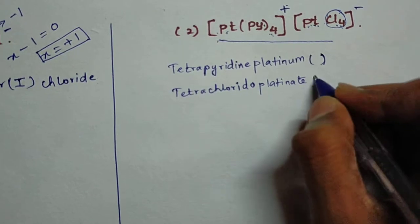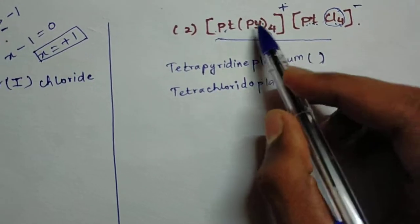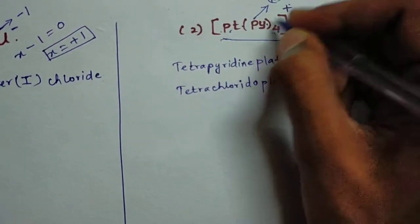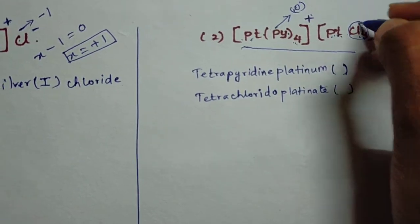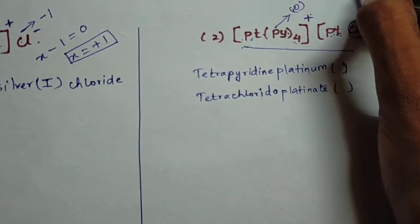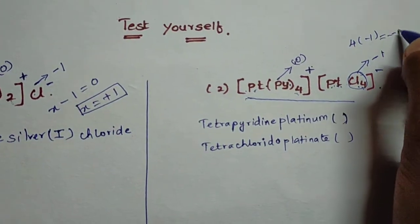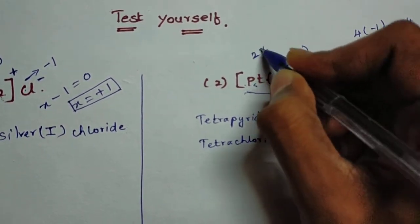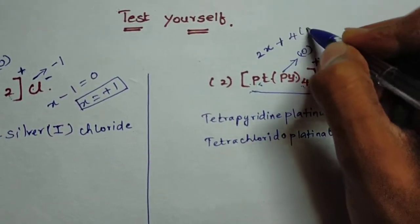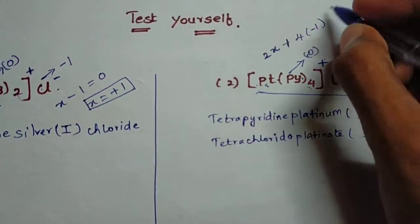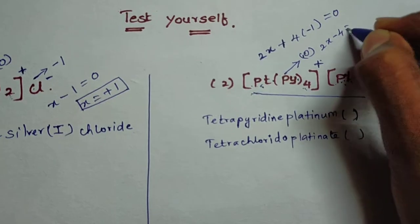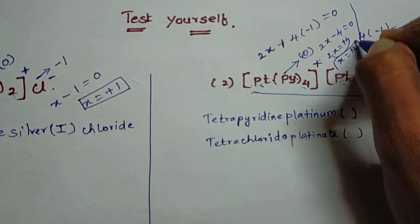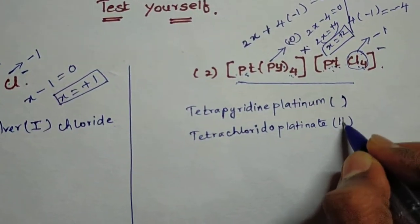Pyridine is a neutral ligand so its oxidation state is zero. For the cation: 2x + 4(minus 1) = 0, so 2x minus 4 = 0, giving 2x = plus 4, therefore x = plus 2.